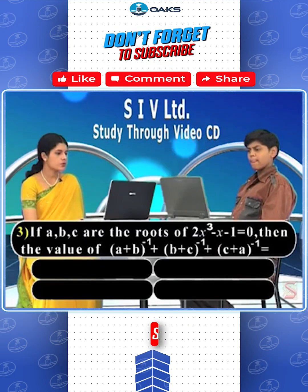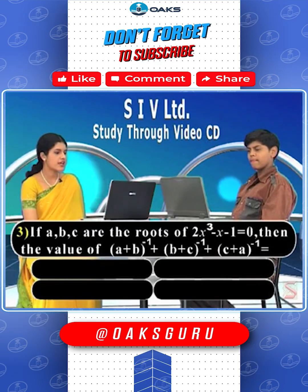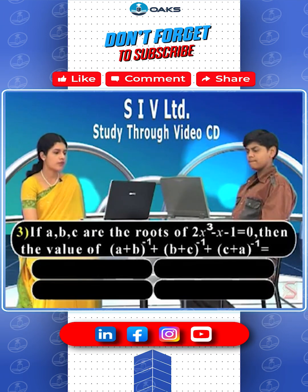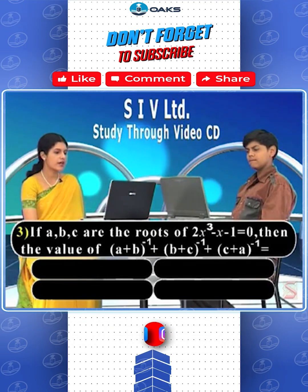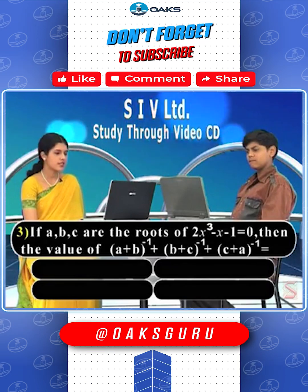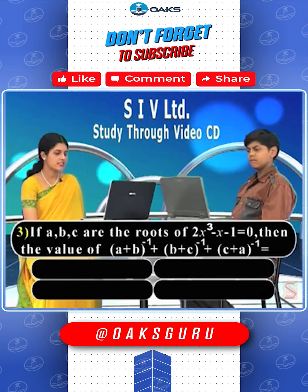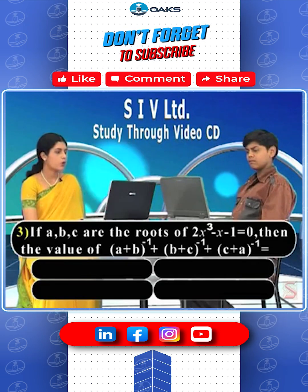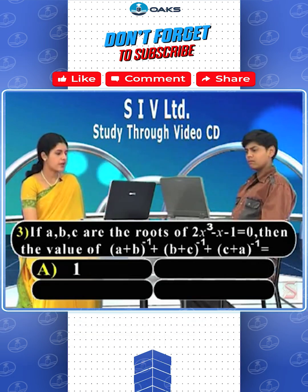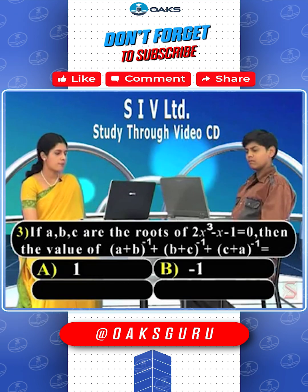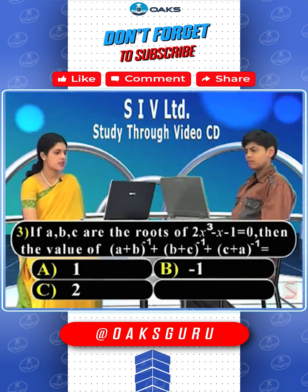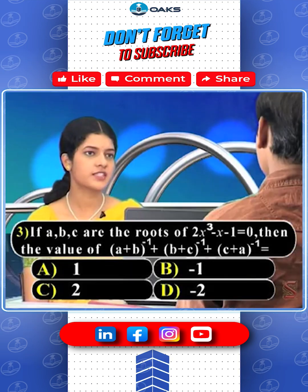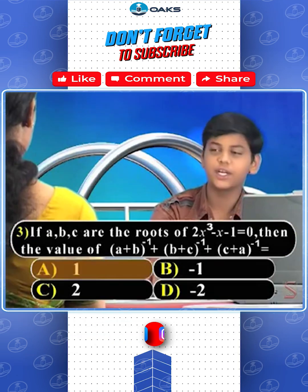If a, b, c are the roots of 2x³ - x - 1 = 0, then the value of (a+b)⁻¹ + (b+c)⁻¹ + (c+a)⁻¹ is equal to? Your options are: option A: 1, option B: -1, option C: 2, or option D: -2. What is your answer?